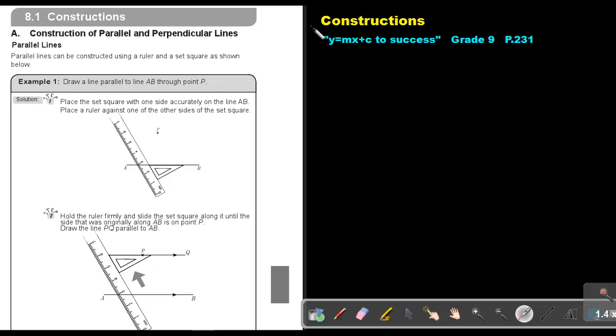Part 1. Constructions. You will find this on page 231 in the Namibian Mathematics Grade 9 textbook, Y equals MX plus C to success.